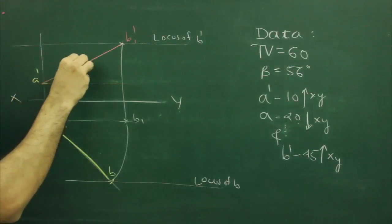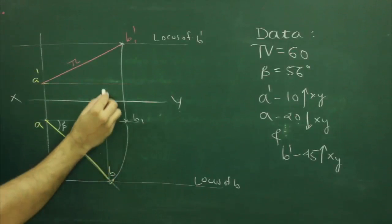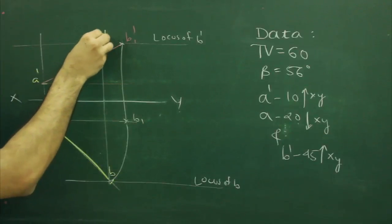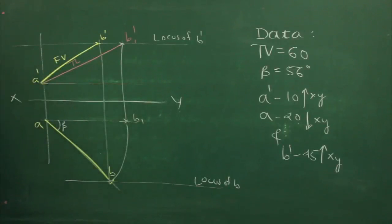So this is the true length. After that, you extend B straight up until it intersects with the locus. Mark that point as B dash. So we got the front view as well.